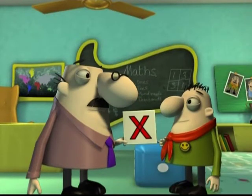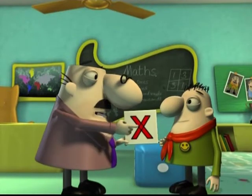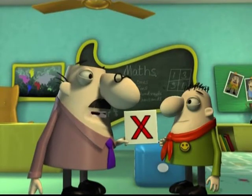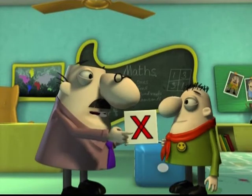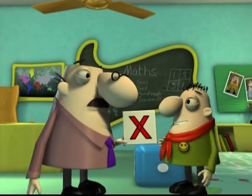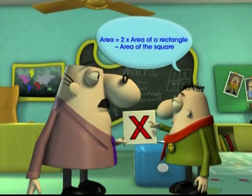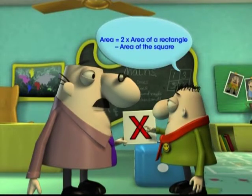Why? Because the square is a part of both the rectangles and we end up counting it twice when calculating the area of the rectangles. Oh yeah, I missed that. Thus, the area is two times the area of rectangle minus the area of small square.